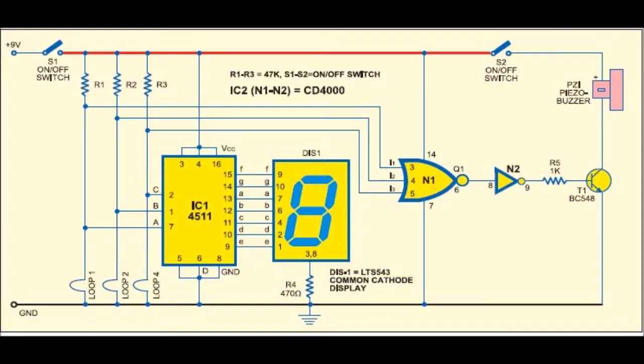The circuit works off a 9-volt regulated power supply. A common cathode seven-segment display LTS-543 is used for displaying whether the loops are intact or not. Wire loops 1, 2, and 4 are connected to the A, B, and C inputs of seven-segment decoder 4511 IC1 respectively.